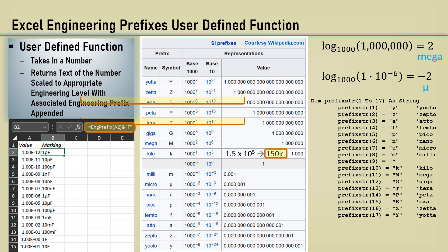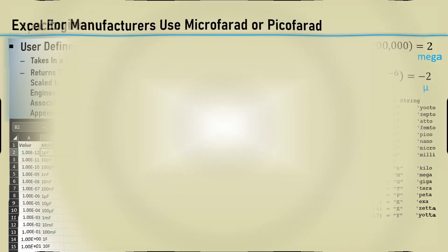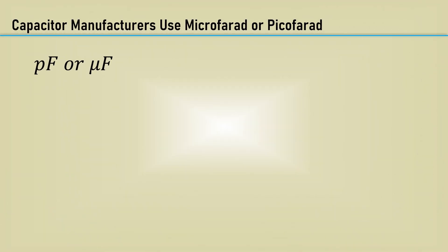The problem is, capacitors sold are rarely denoted or labeled as nano or milli. They are most usually in picofarad or microfarad. Like here,